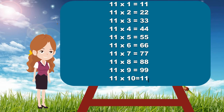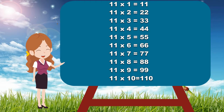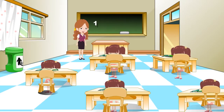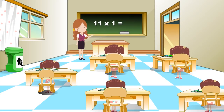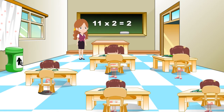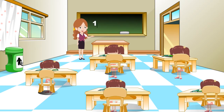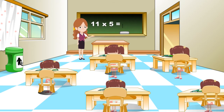Now children, repeat this table with me. 11 ones are 11. 11 twos are 22. 11 threes are 33. 11 fours are 44. 11 fives are 55. 11 sixes are 66.